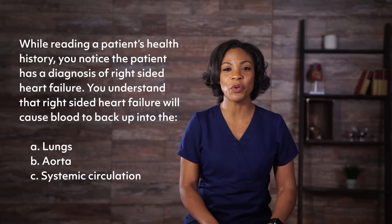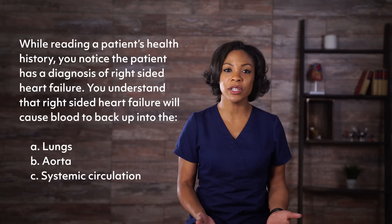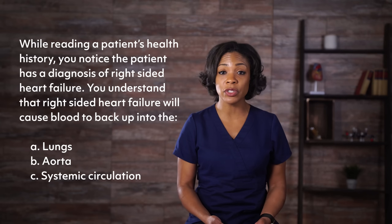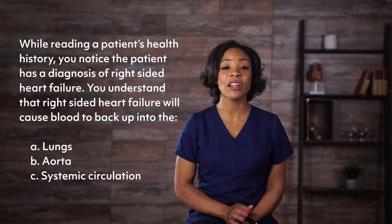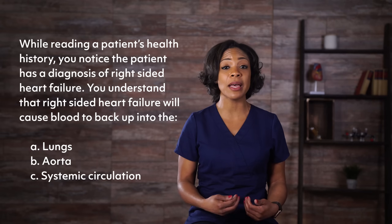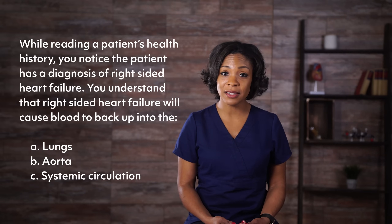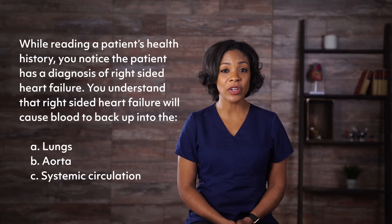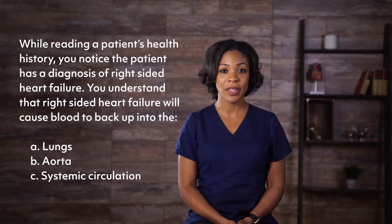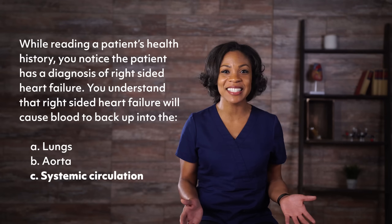Let's try one more. While reading a patient's health history, you notice the patient has a diagnosis of right-sided heart failure. You understand that right-sided heart failure will cause blood to back up into: a) the lungs, b) the aorta, or c) systemic circulation. If you said c, the systemic circulation, that is correct!